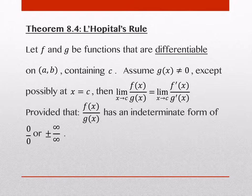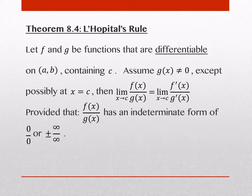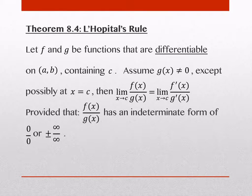It's called L'Hopital's Rule. L'Hopital's Rule says if you have functions f and g that are differentiable on the interval (a, b), and c is between a and b, and g of x is not equal to 0 — because that would give you a denominator of 0 — then the limit of f of x over g of x is equal to the limit of f prime of x over g prime of x, as long as f of x over g of x has an indeterminate form of 0 over 0 or infinity over infinity.